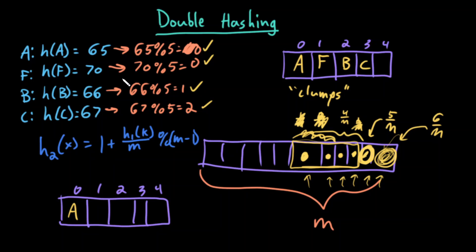With this, I'll do 1 plus 70 divided by m. M is the length of my array, which is 5. 70 divided by 5 is 14. Let me actually write this down. So I would get 1 plus 14 mod 4. 14 mod 4 would be 2. 1 plus 2 is 3.